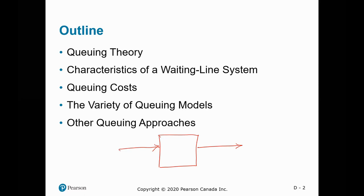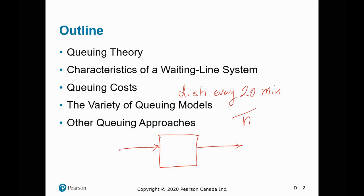One way is based on process time. For example, in this kitchen they can make a dish every 20 minutes. We can convert that to how many dishes they can produce every hour — that's three dishes per hour. So you see these two methods, the time and the rate, are related. You can exchange those.